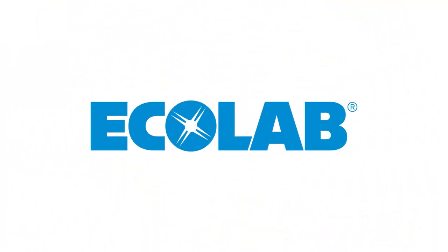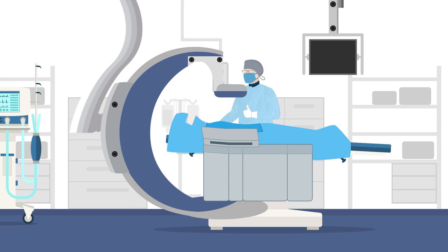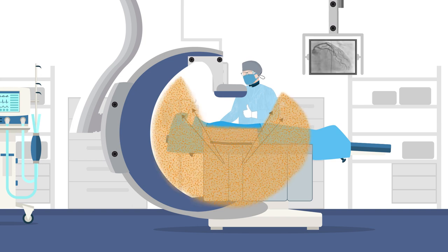Introducing Ecolab's Drape Armor. Ecolab's Drape Armor is a small drape used on the patient's body to redirect scatter radiation away from the clinician.